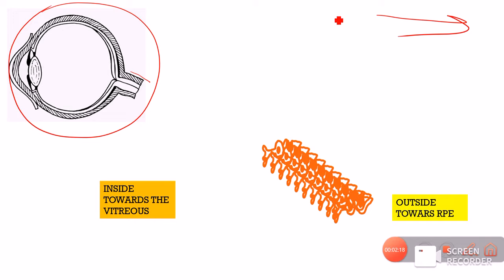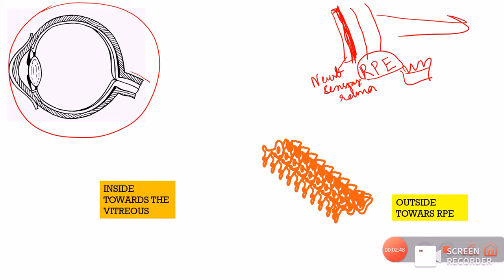The retina is divided into two parts. The outer part is the retinal pigmented epithelium (RPE) and the inner part is the neurosensory retina. The RPE consists of pigmented cells with macrophage and metabolic functions. The neurosensory retina is itself divided into nine layers — it is called neurosensory because the three cell types (photoreceptors, bipolar cells, and ganglion cells) form these nine layers and have the sensory function of vision.